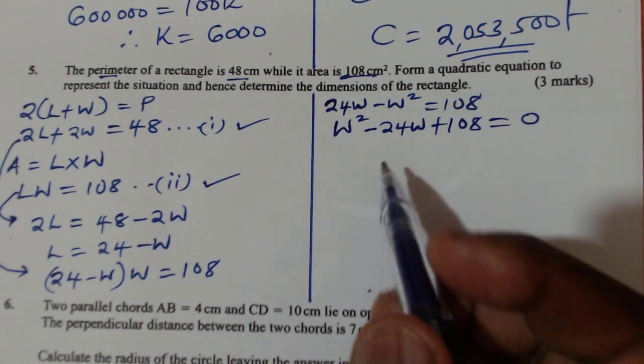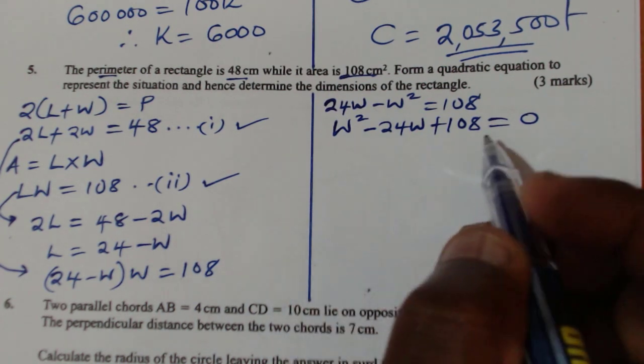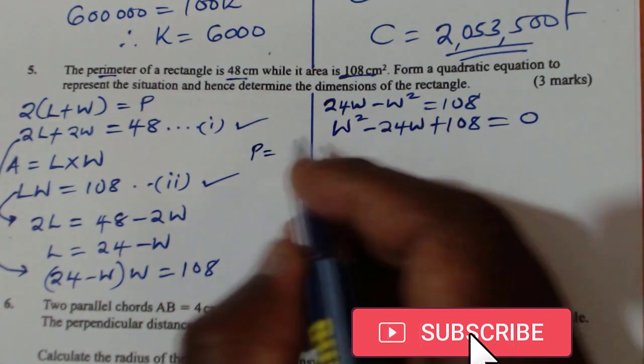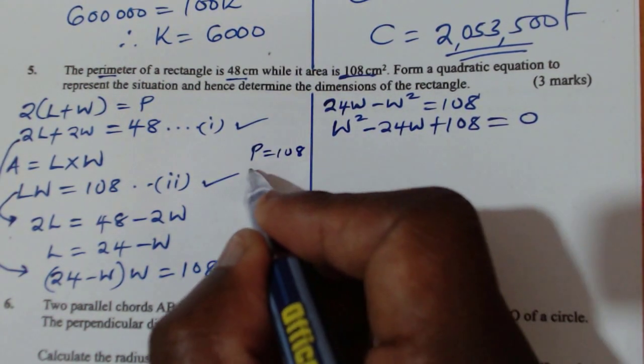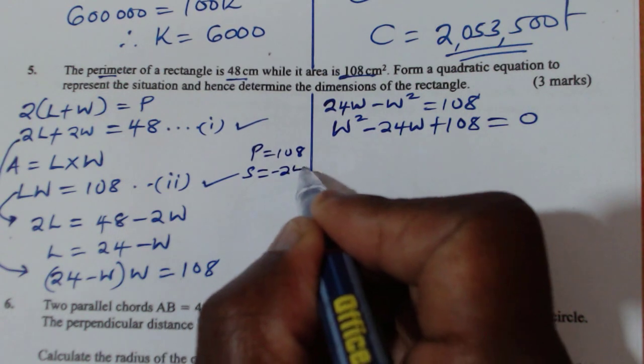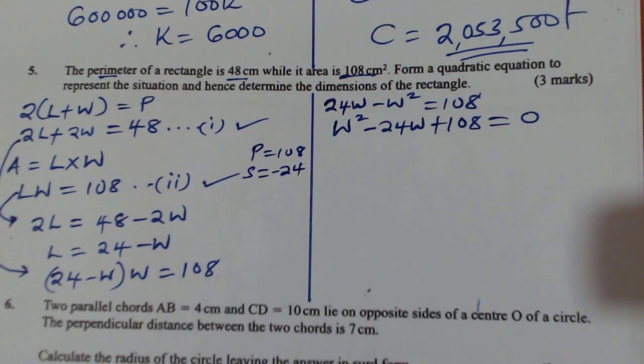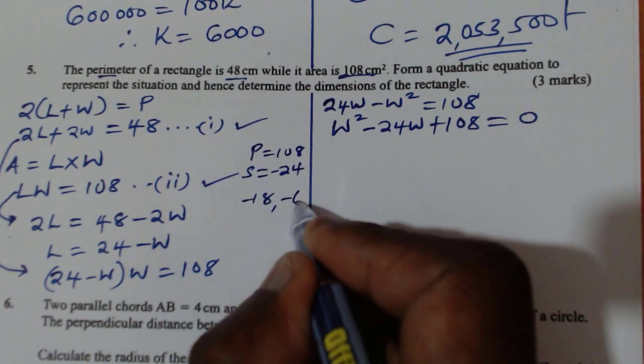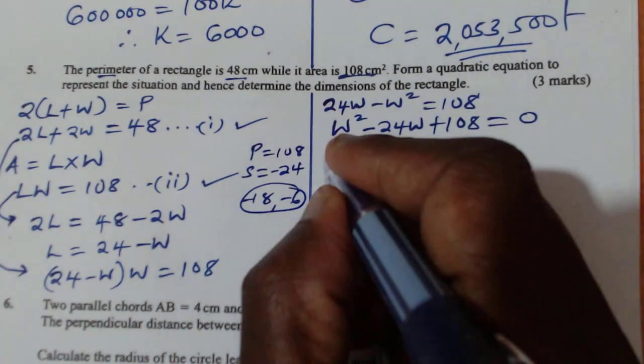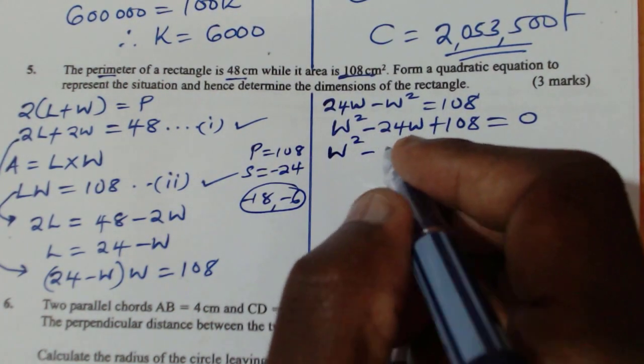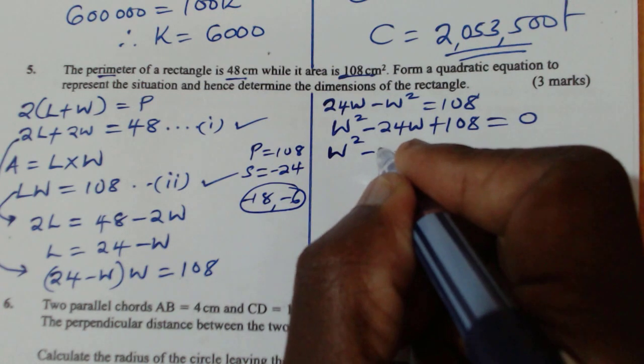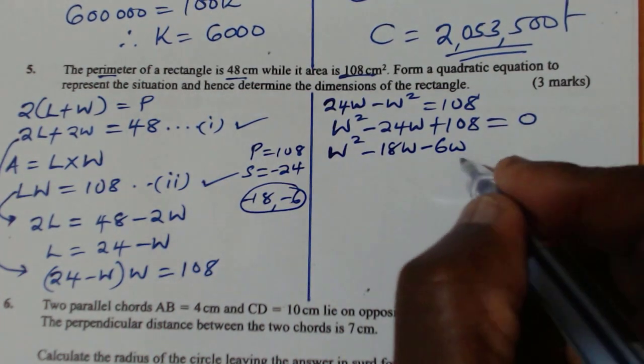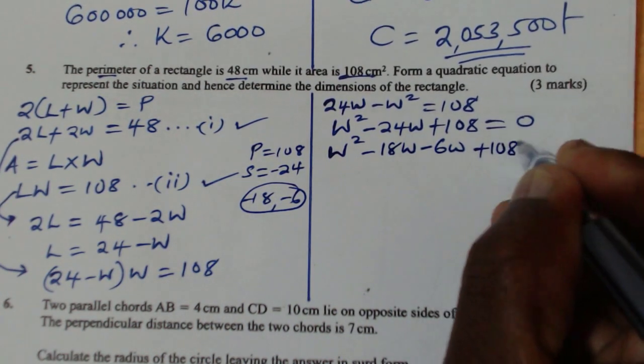So I'll use factorization. Look for two numbers whose product will be 108 and the sum will be negative 24. So these numbers are negative 18 and negative 6. So these two will help me. W squared minus 18W minus 6W plus 108 equals 0.